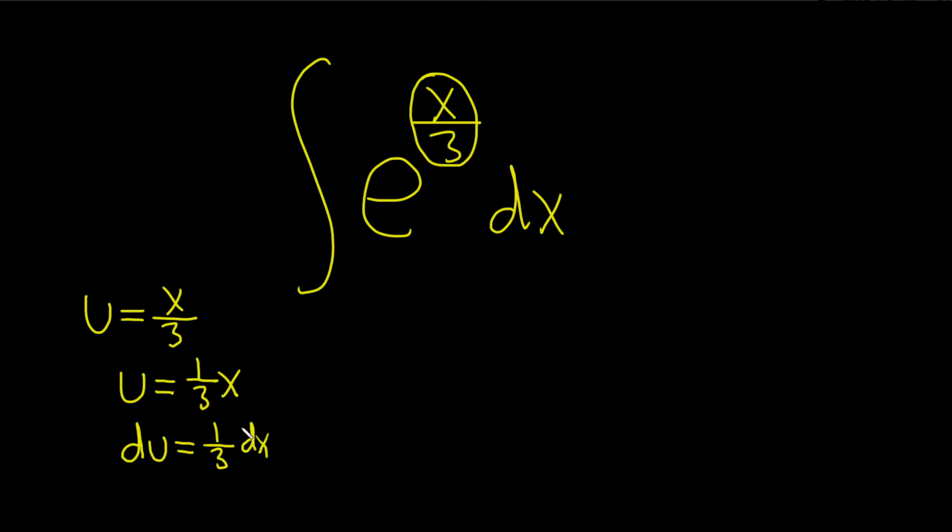Okay, now we need to make this look like what's in our integral. So here we have a 1 third, and then here in our integral we don't. So we need to get rid of the 1 third. So we can maybe multiply by 3. That gives us 3 du equals dx.